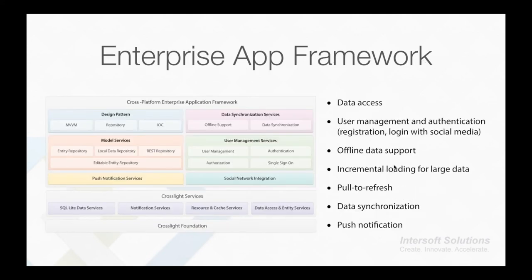When building mobile apps, developers are typically faced with common functions such as data access, user management and authentication, logging with social media, offline data support, incremental load for large amounts of data, pull-to-refresh, data synchronization, push notification, and more. Crosslight 2 provides a comprehensive application framework called Enterprise App Framework, which serves as best practices and guidelines for common functions found in business apps. Designed with solid patterns, the app framework provides the power and flexibility you need to rapidly build enterprise-grade mobile apps. More details about the app framework and data-related services will be covered in tomorrow's webinar.